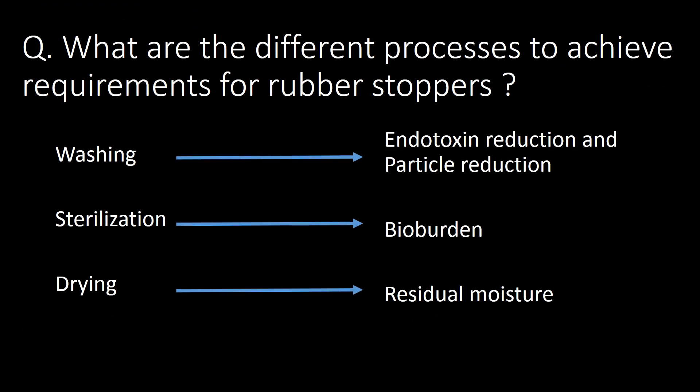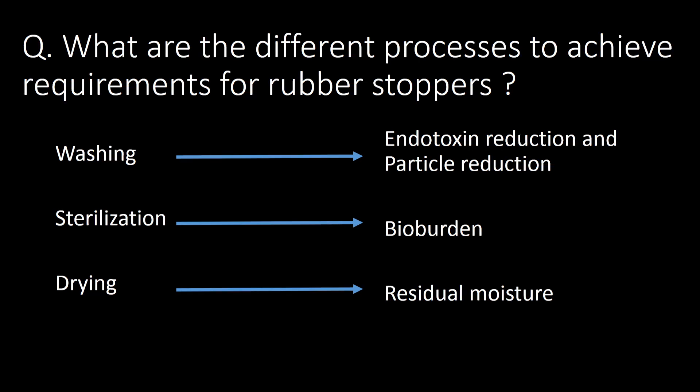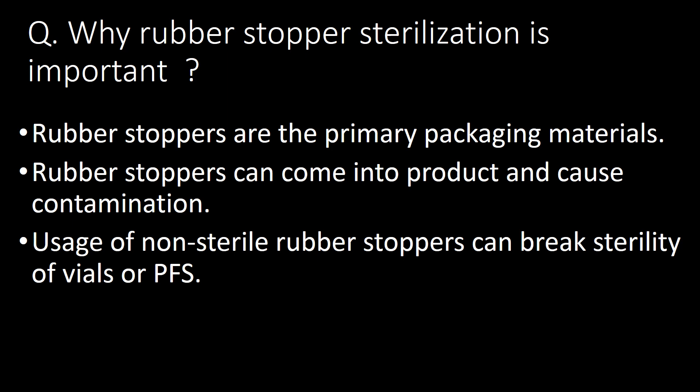What are the different processes to achieve requirements for rubber stoppers? There are three major processes: first, washing — by which endotoxin reduction and particle reduction can be done; second, sterilization — done to reduce bioburden; and third, drying — to reduce residual moisture.